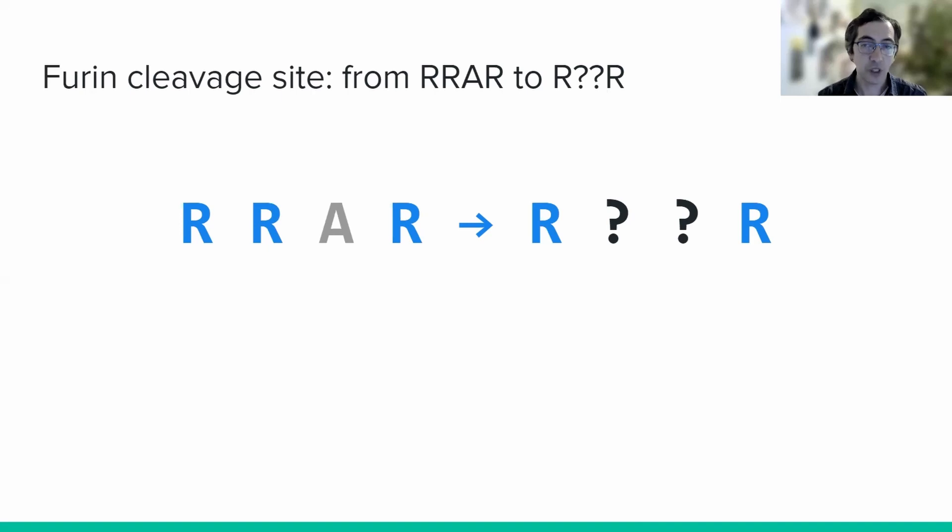In fact, the furin cleavage site is not specific to RRAR. Rather, any amino acid sequence which fits the pattern of R followed by two amino acids followed by R may serve as a furin cleavage site.